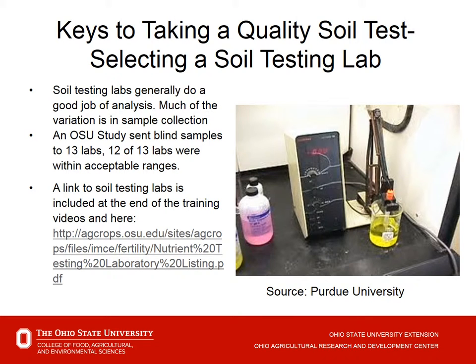So, selecting a soil testing lab. Generally speaking, soil testing labs do a very good job. There are probably 10 to 15 labs that do work for soil sampling here in Ohio. Honestly, there's more variation in the collection of the soil sample than there is in the labs. About five years ago OSU sent blind samples to 13 labs, and 12 of the 13 came back within very acceptable ranges. A brief conversation with the state fertility specialist corrected things with that other lab. If you want to look at links to soil testing labs, there are a couple of references at the end of this video segment.